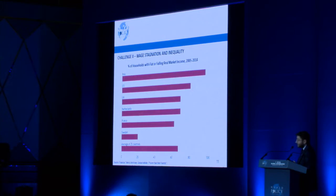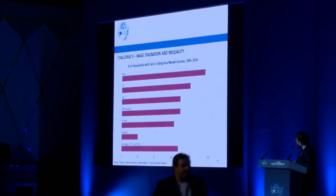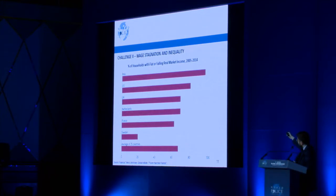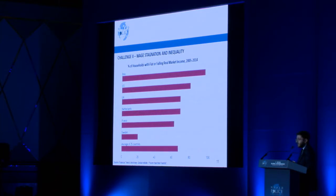From a McKinsey Global Institute report titled 'Poorer Than Their Parents': upwards of 90% of Italian households in a nine-year period saw their household income stagnate or decline. That's also true of 80-something percent of U.S. households and 70-something percent of U.K. households. My thesis is that this is dynamite right at the heart of our democracies — it is not sustainable politically.